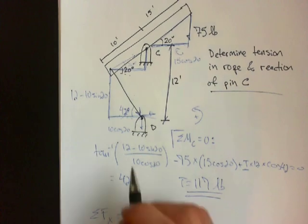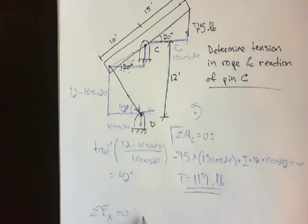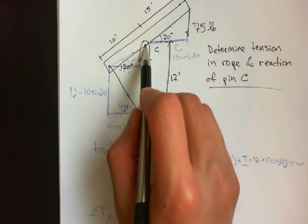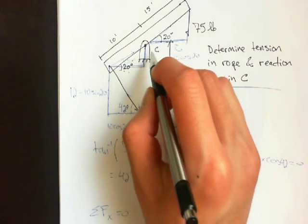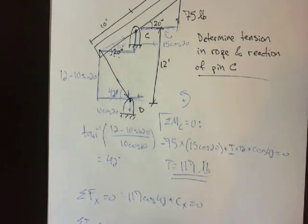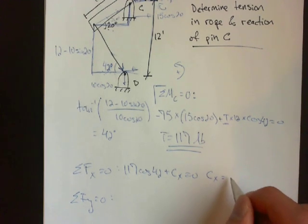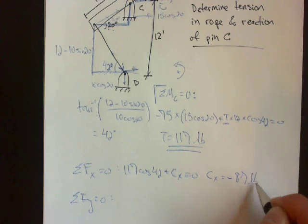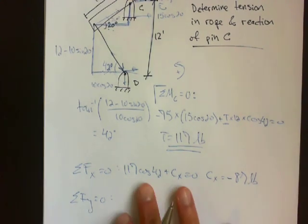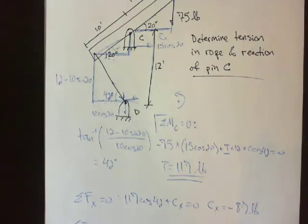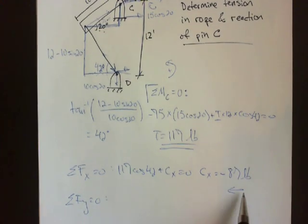Okay, so for X, we have the X component of this tension, which is 117 cosine 42. And we have the reaction at C. Let's assume it's going like this. Plus CX equals 0. Therefore, CX equals negative 87 pounds. Since it's negative, it tells us that our assumption of this direction is wrong, that it's actually going this way to the left.